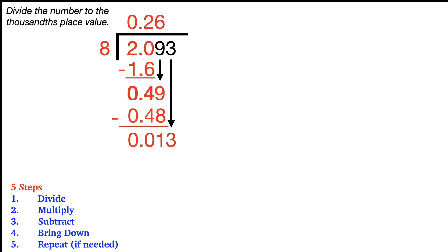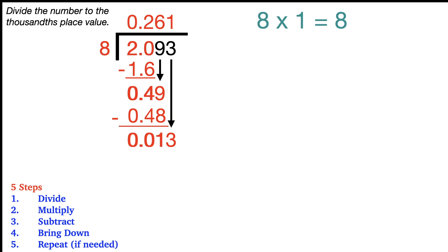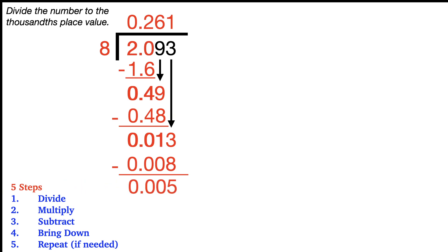We'll start all over again with our divide step. Ask yourself how many times can eight go into thirteen thousandths without going over? That would be one time because eight times one — and the one goes at the top in the thousandths place value — is equal to eight. The eight goes on the bottom, but remember it's going to be eight thousandths because of our place value. When you subtract, we will get five thousandths. However, we do not need to go any further — that is not a remainder, and we do not need to carry any more information because the direction said we're working to the thousandths place value. So our answer is two hundred sixty-one thousandths.